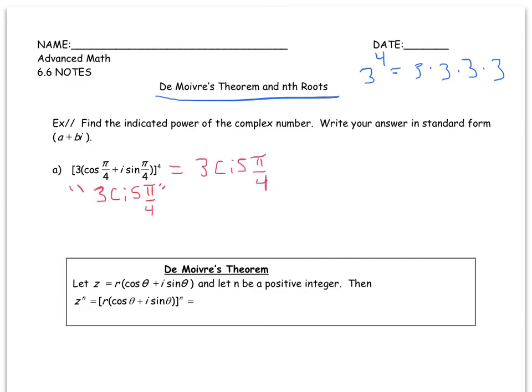So 3, there's 1 of them, times 3, there's 1 of them, times 3 CIS pi over 4. There we are, 4 times.